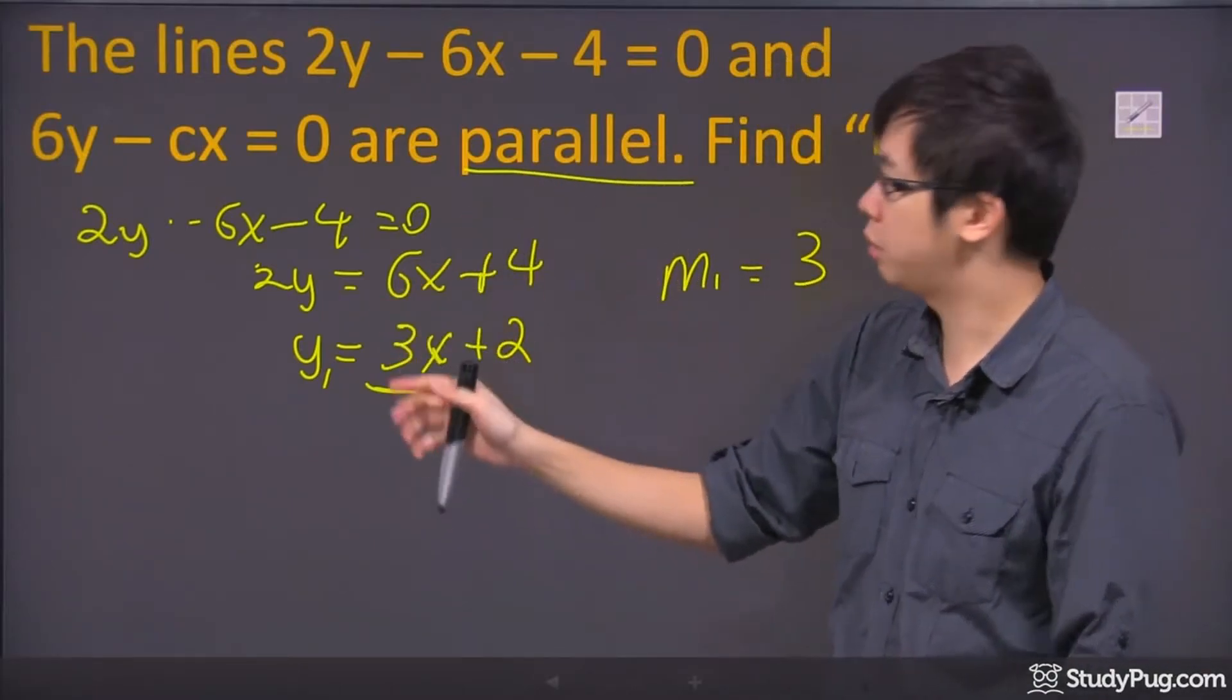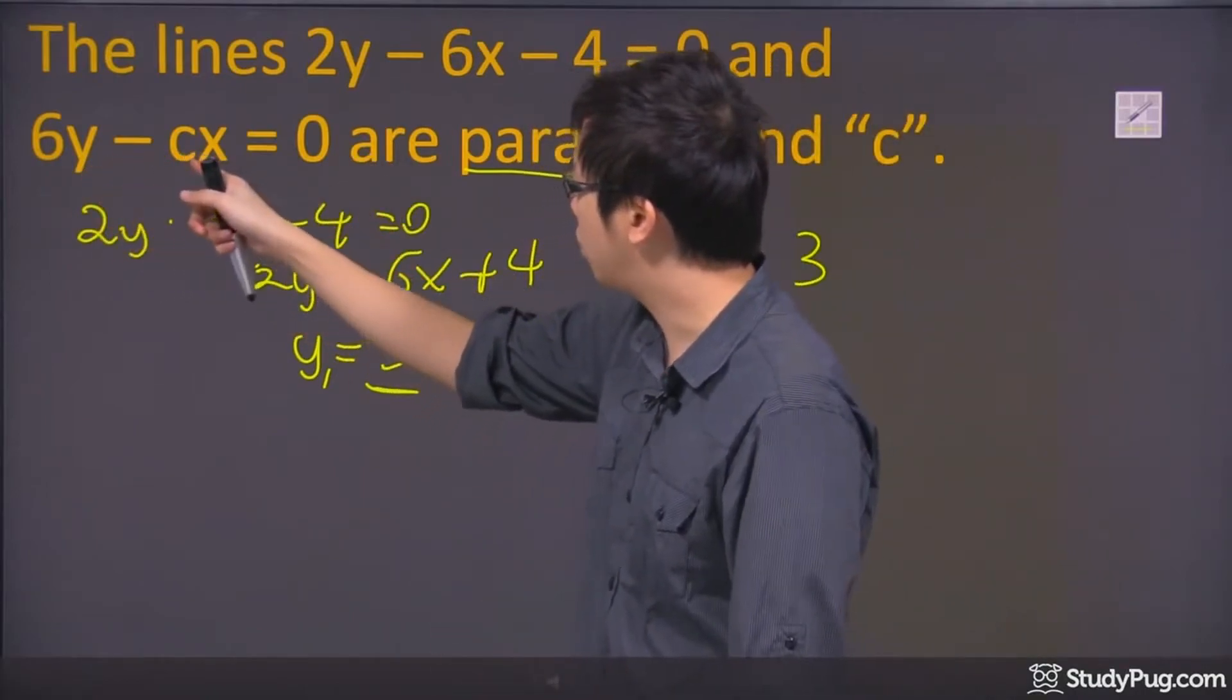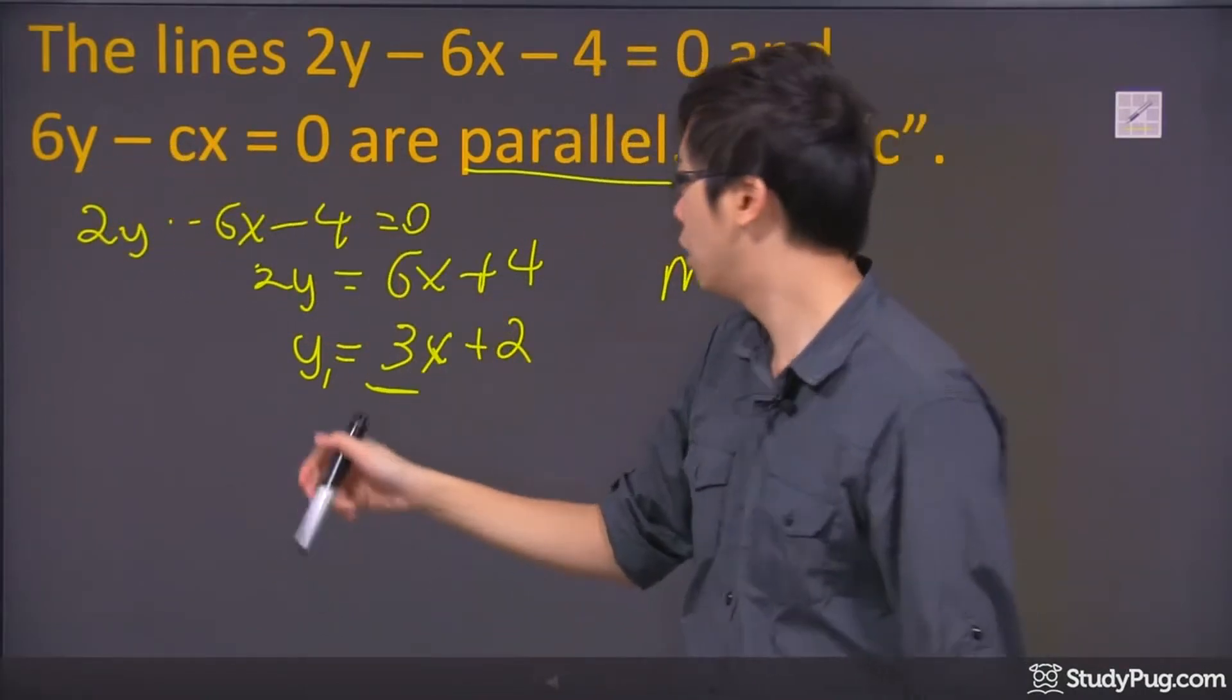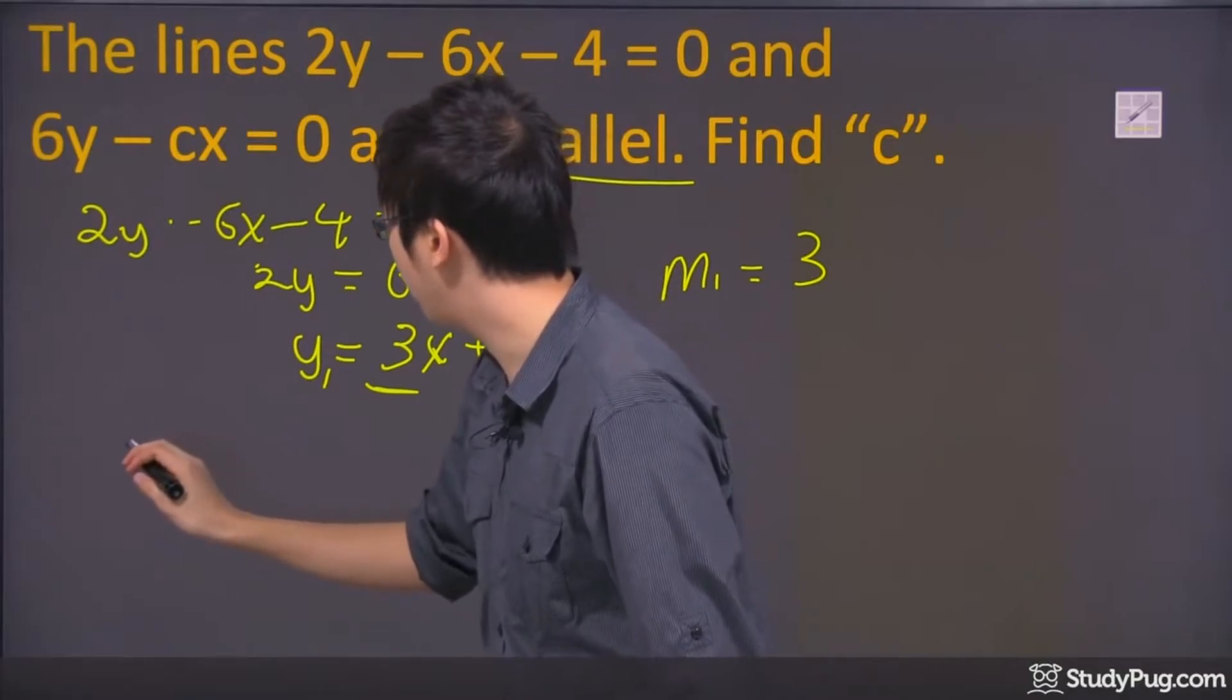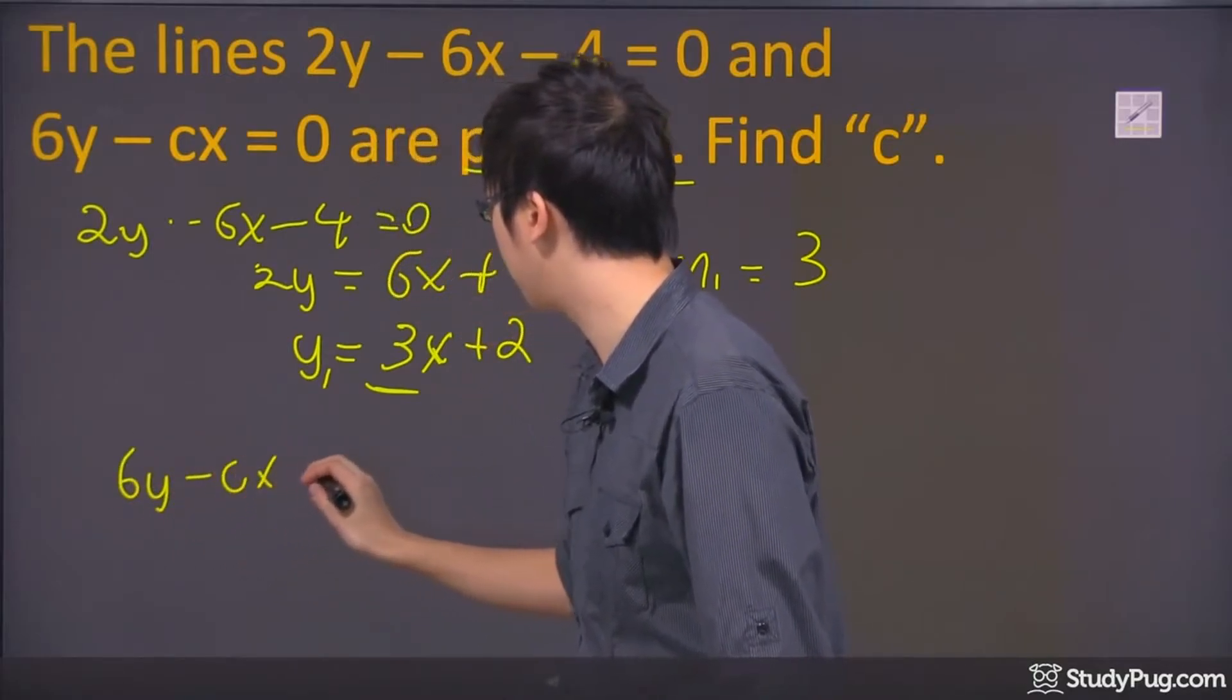Now, they must be parallel. So let's take a look over here. The 6y minus cx equals 0, right? So if I had to solve for y for that one, let me just copy down the question here one more time.